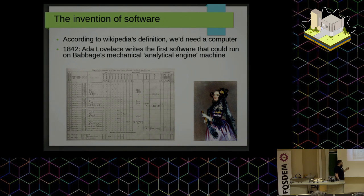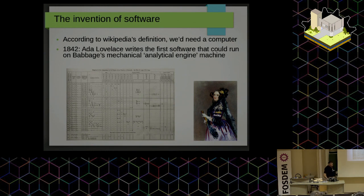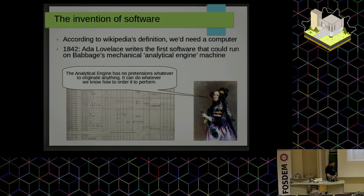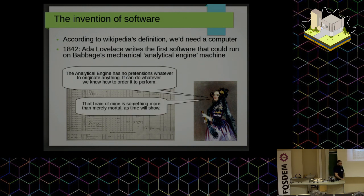Lady Lovelace realized that machines not made for a single purpose — like the Babbage Analytical Engine — can actually do whatever you want. She said: 'The Analytical Engine has no pretensions to do something on its own — it's about us instructing it through a number of steps.' That's the first definition of software, back in 1842. She also said: 'This brain of mine is more than merely mortal — time will show.' And she was right, because she was a genius.